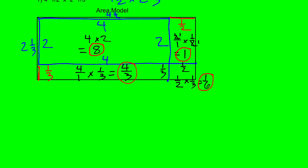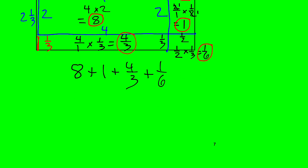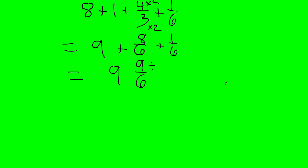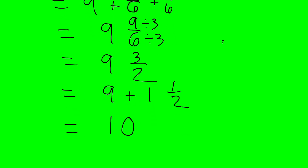So what we're left with now are 4 products: this rectangle had an area of 8, this was an area of 1, this was 4 over 3, and this was one sixth. To get the total area I have to add up all those parts: 8 + 1 + 4/3 + 1/6. Now 8 plus 1 equals 9. For the fractions we need a common denominator — the common denominator of 3 and 6 is 6 — so 4/3 becomes 8/6, plus 1/6 gives 9/6. That works out to 9 and 9/6. I can simplify by dividing by 3 to get 9 and 3/2, and 3/2 is the same as 1 and a half, so this works out to 10 and a half.